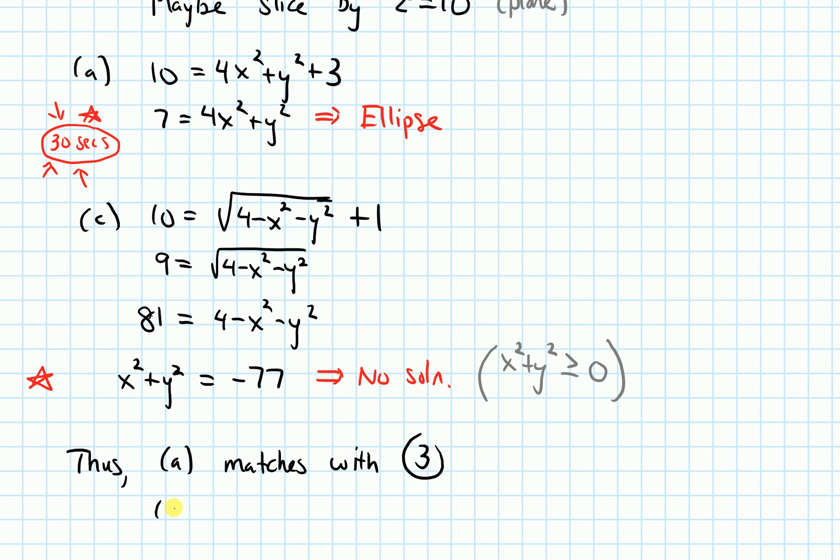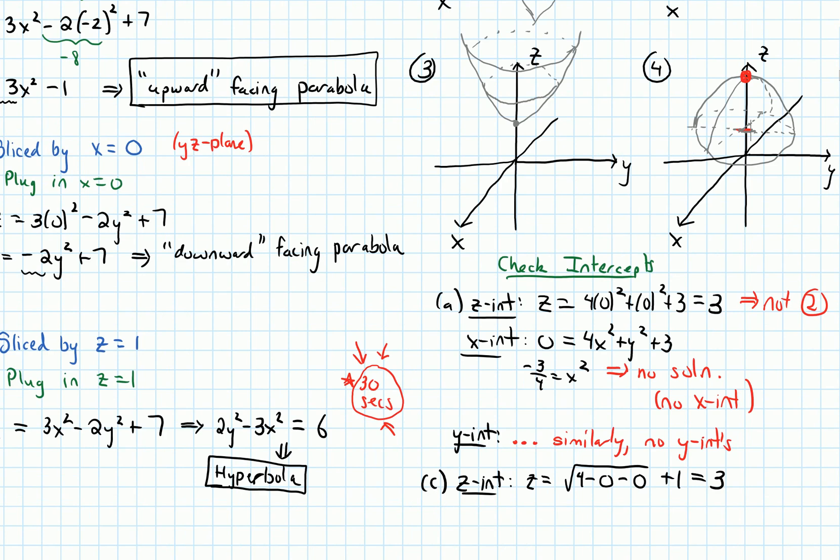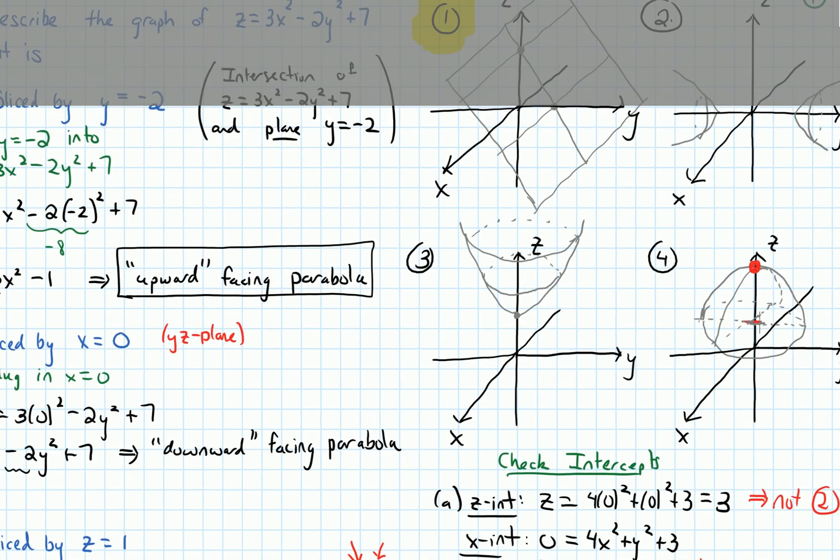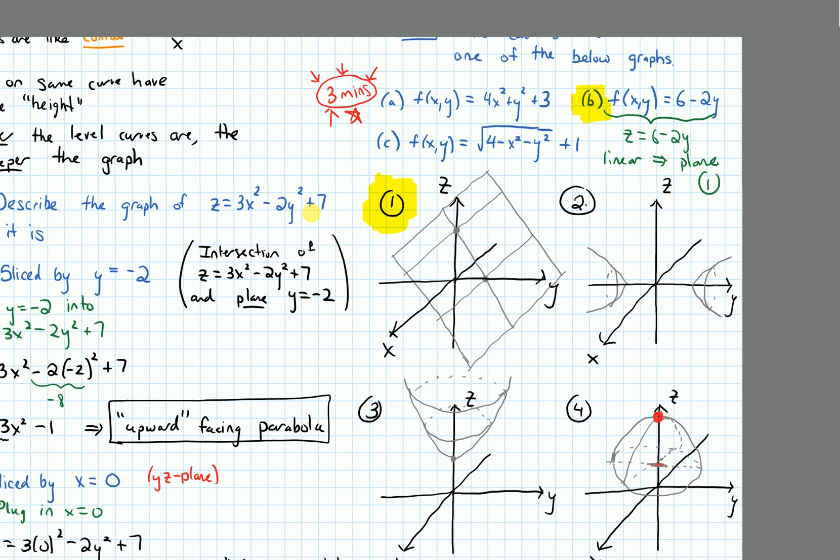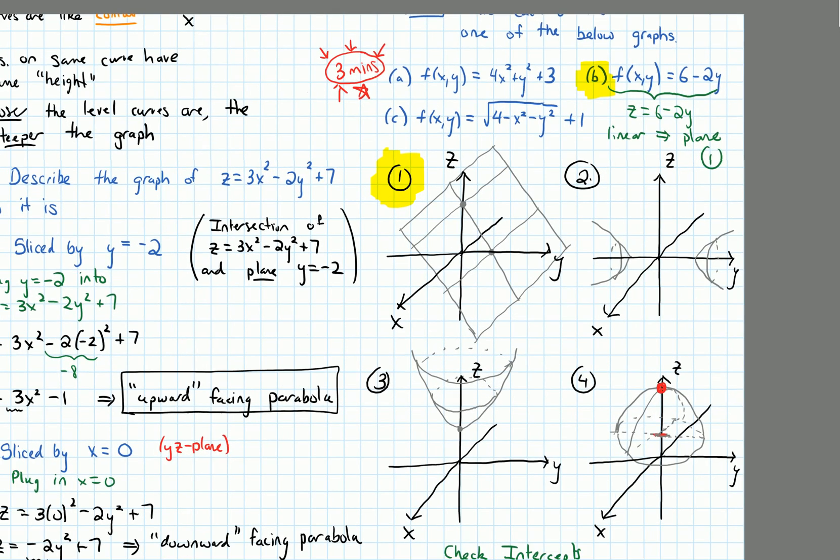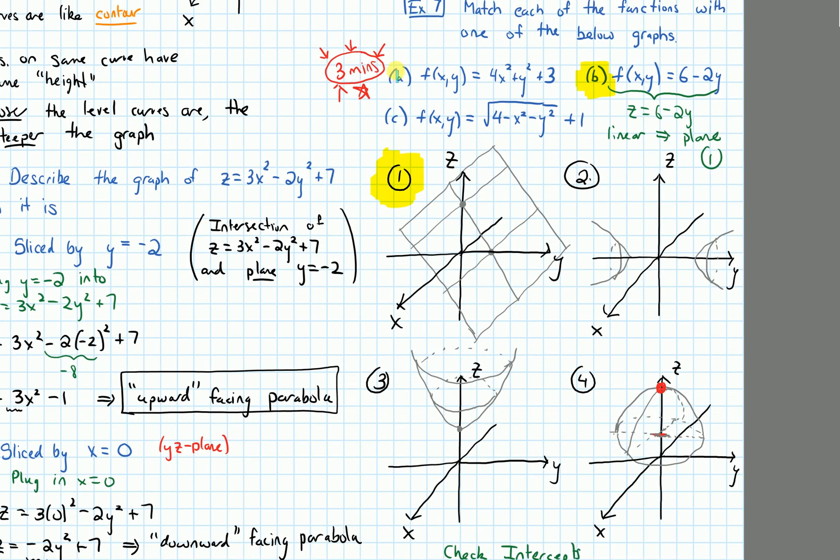And c, the square root function here, with these x squared and y squared inside of it, matches with graph four. So back with our graphs, we said that graph a matched with this parabolic bowl, that was three. And c matched with this graph here.